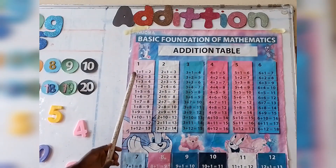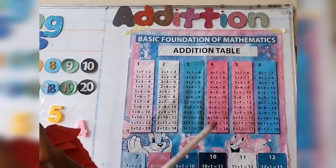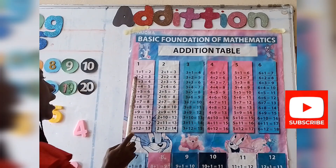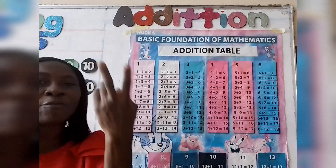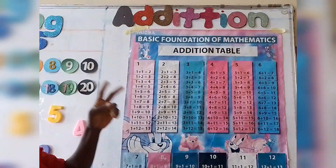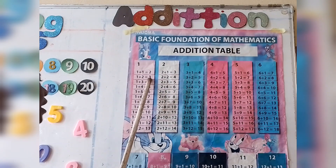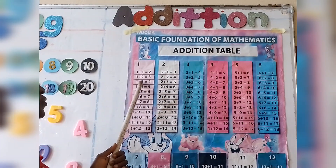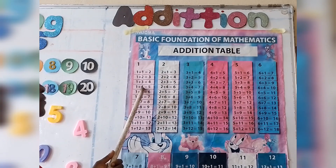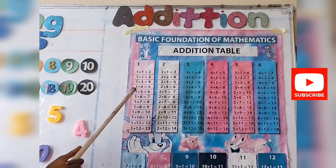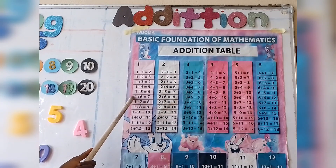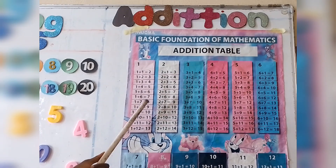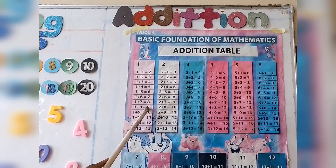Now let's look at the addition table — this is basic foundation of mathematics. Table one: one plus one gives us two. One object plus another one object gives us two. One plus two gives us three. One plus three gives us four. One plus four gives us five. One plus five gives us six. One plus six gives us seven. One plus seven gives us eight. One plus eight gives us nine.